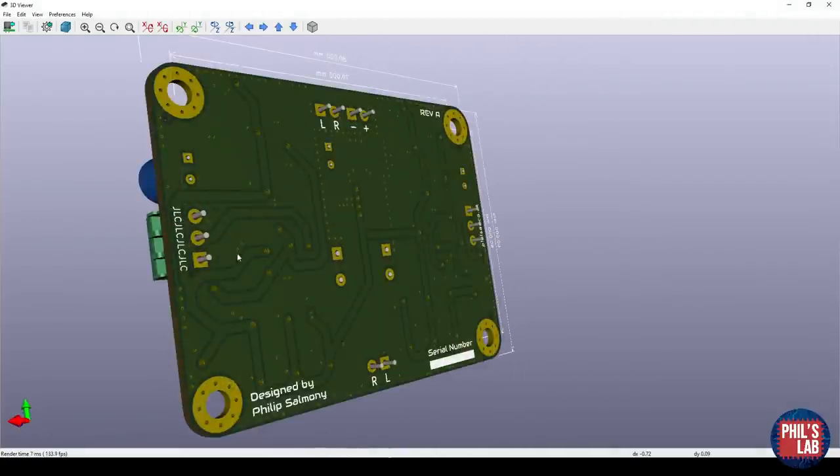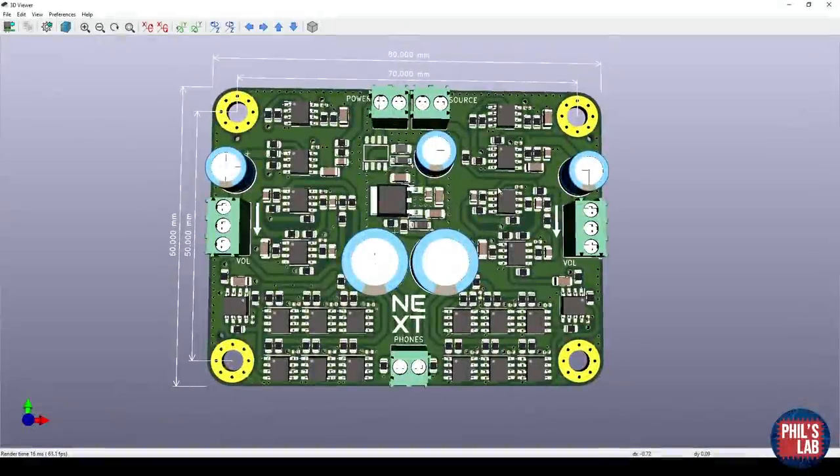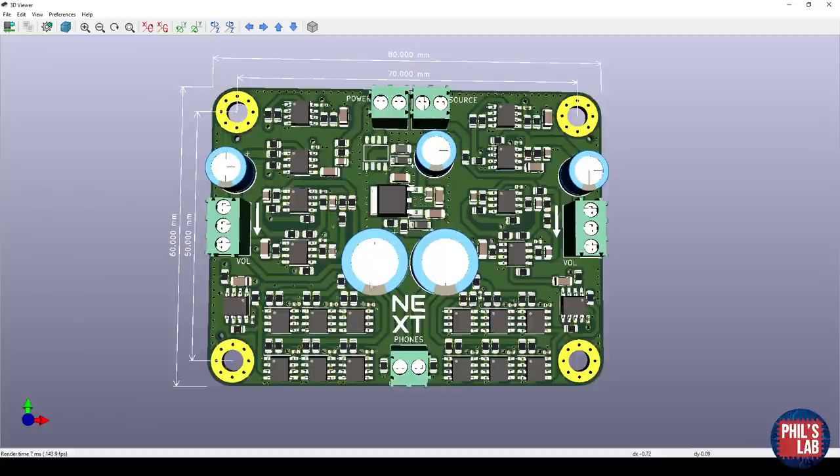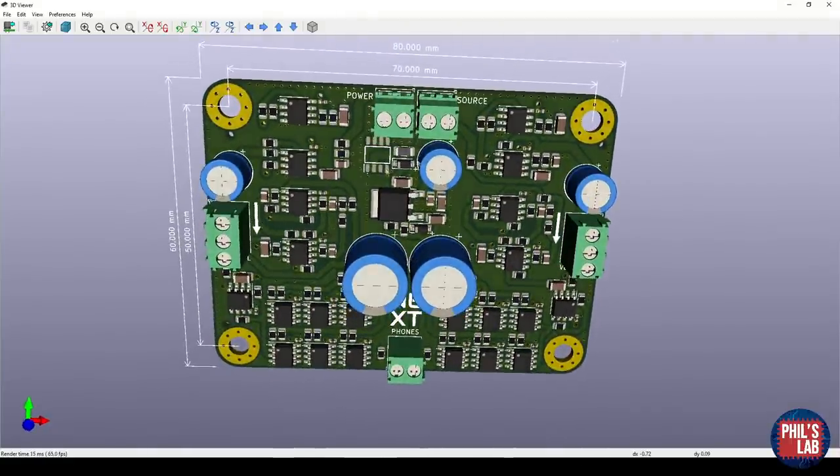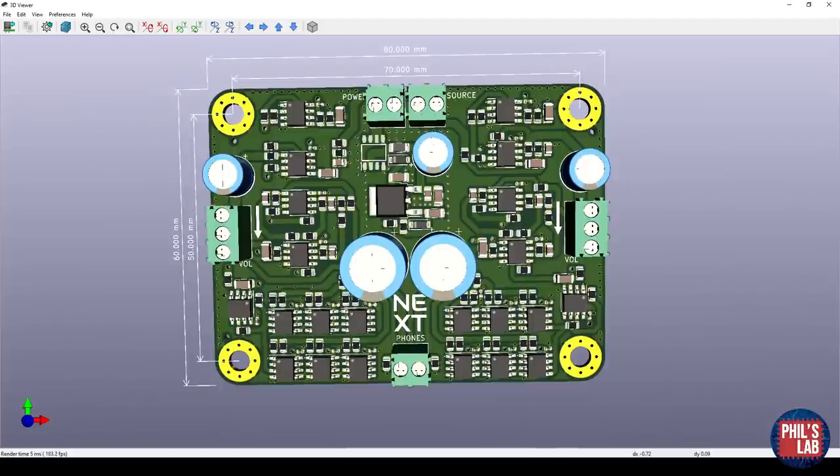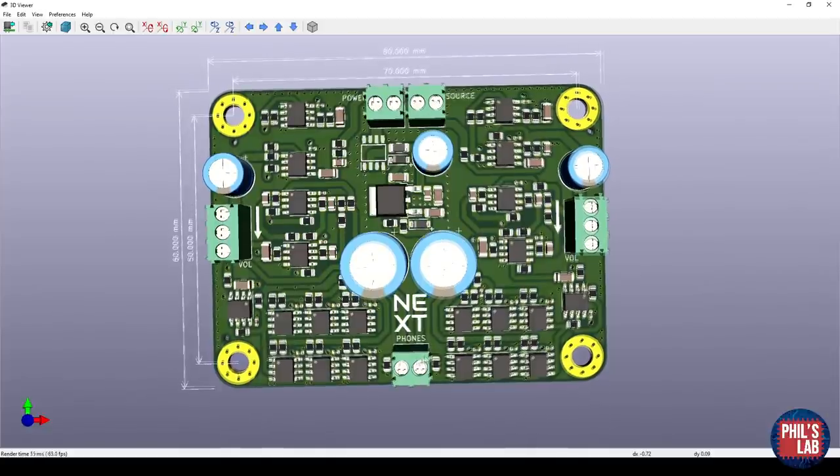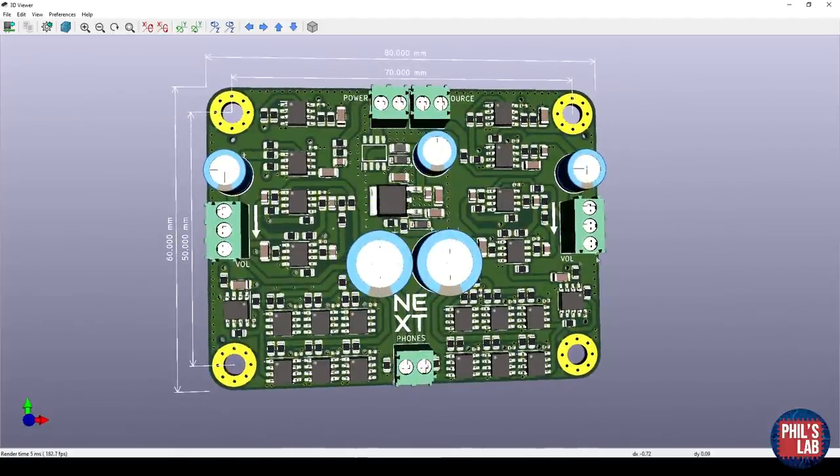Here we are in the KiCad 3D PCB viewer. As I said before, this is a simple two-layer board, the top and bottom looking like this. What I needed to do with this design is essentially split it in the middle, have one channel on the left and the other channel identical on the right. So essentially I've mirrored the layout and routing for each of these sides. I've used these screw terminal connectors to connect, for example, the DC power supply as well as the line-in and headphone-out connections.